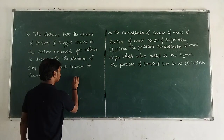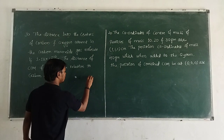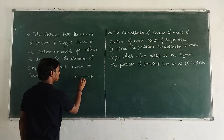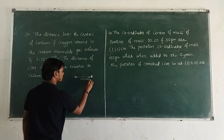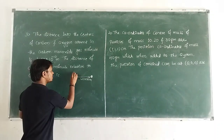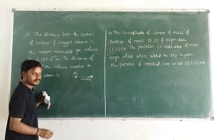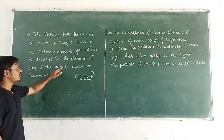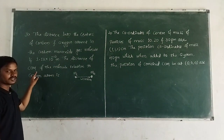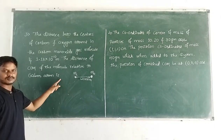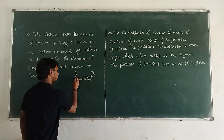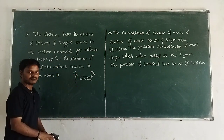There is a carbon monoxide molecule — a carbon atom and an oxygen atom. The distance between them is 1.13 × 10⁻¹⁰ meter. Let us take the mass of the carbon atom and the mass of the oxygen atom. Our question is to find the distance of the center of mass of the molecule relative to the carbon atom, meaning we take the carbon atom as the origin.